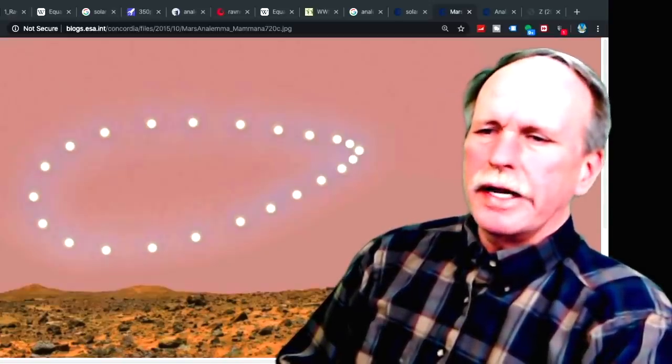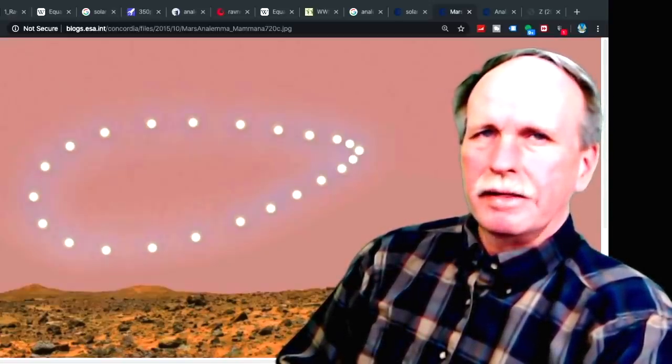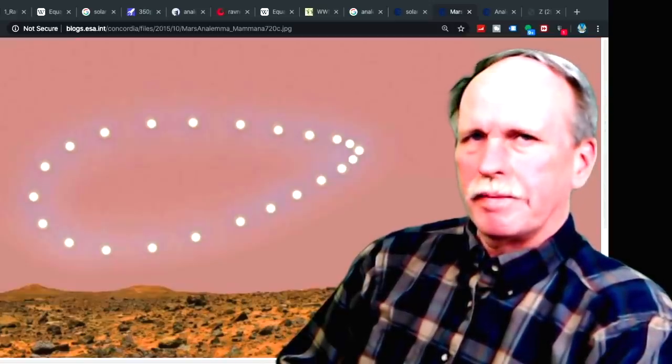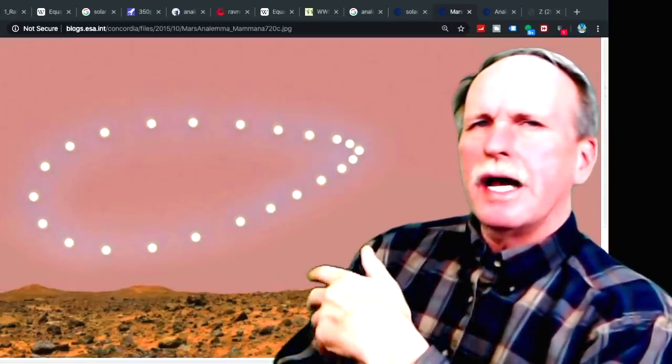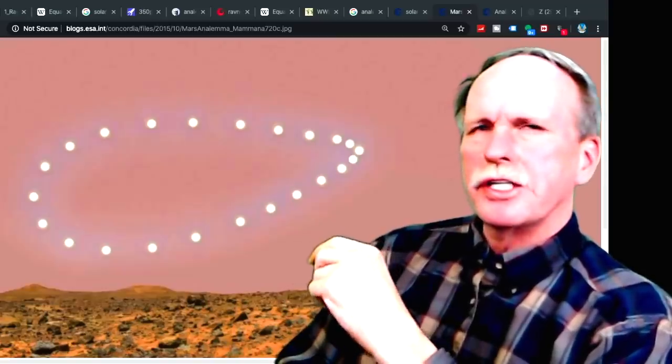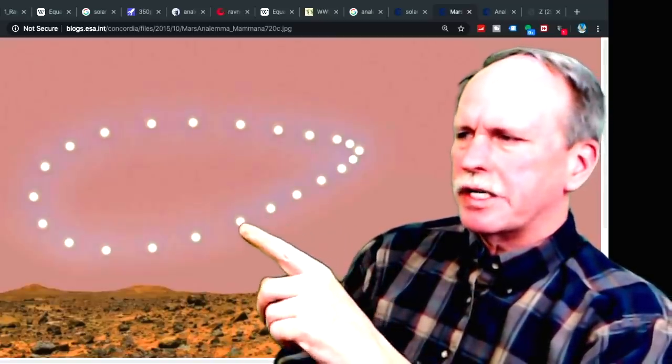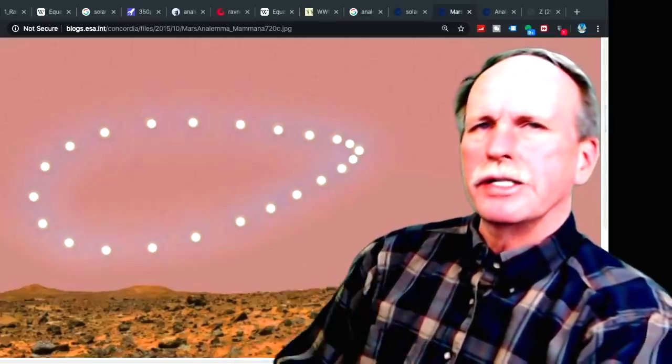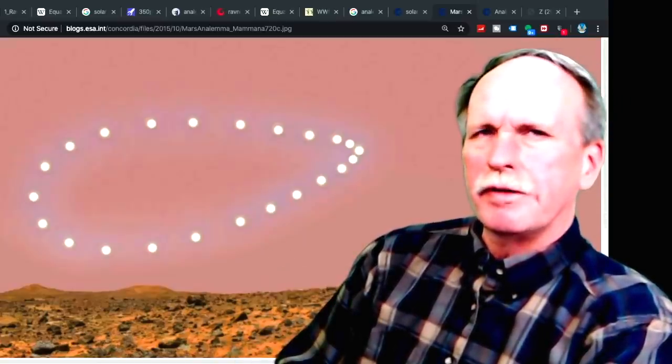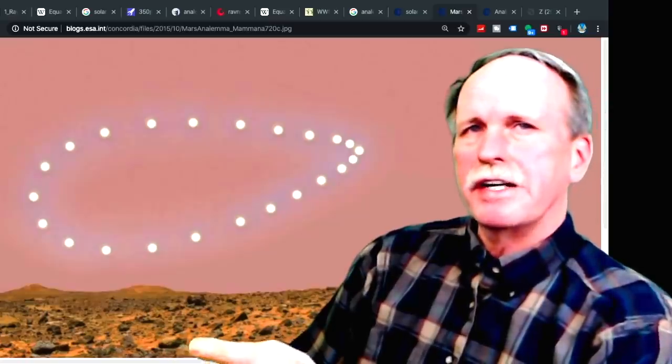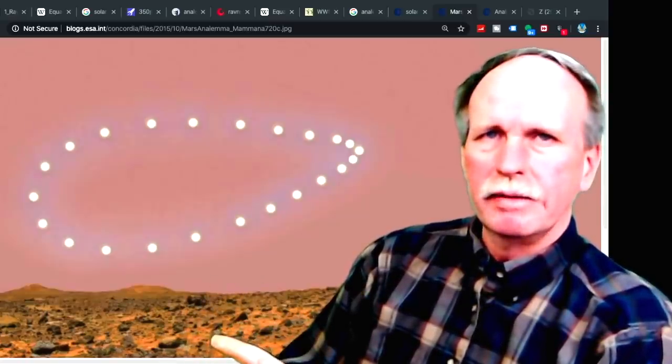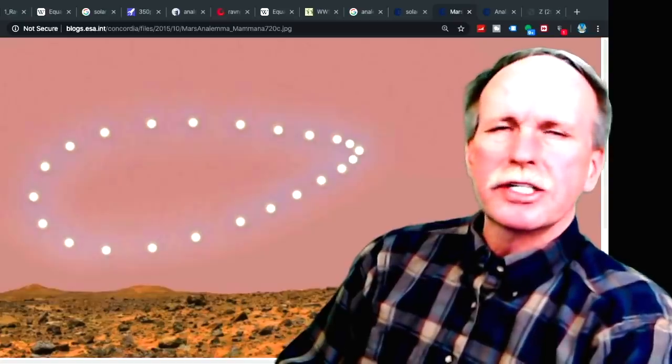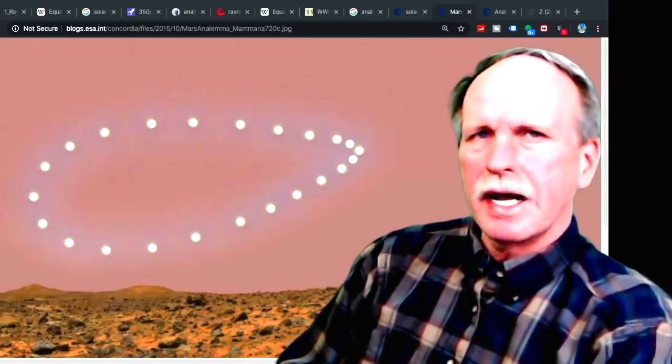Here is the solar analemma on its side with only one loop. It's a bean-shaped analemma. Axial tilt is not playing a big role in this analemma, but the eccentricity of the orbit, the elliptical orbit, is. This is the solar analemma from Mars, which has a very elliptical orbit that basically obliterates the small loop at the top.